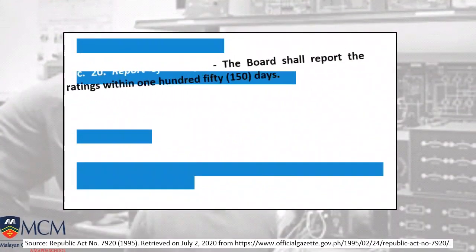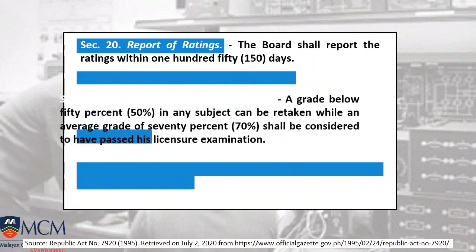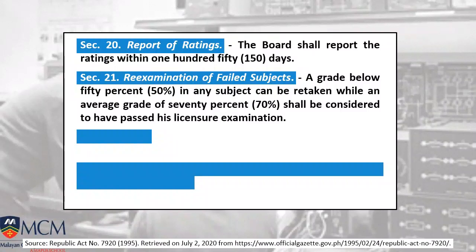Report of Ratings under Section 20: the board shall report ratings within 150 days, but for now, for almost 5 years, it has taken only 3 days through online. Section 21 covers re-examination of failed subjects: if your grade is below 50% in any subject, you can retake, while an average grade of 70% shall be considered to have passed the examination.